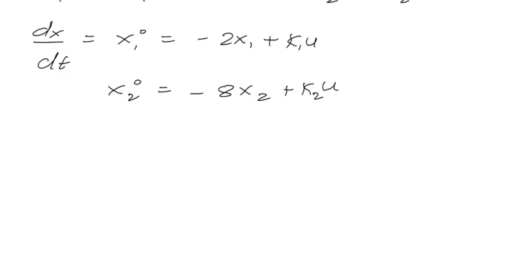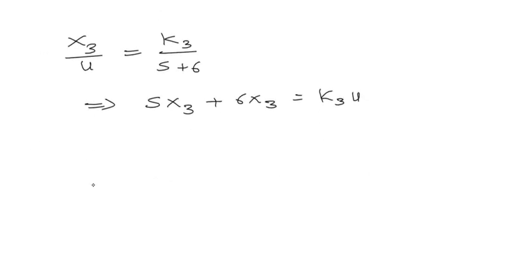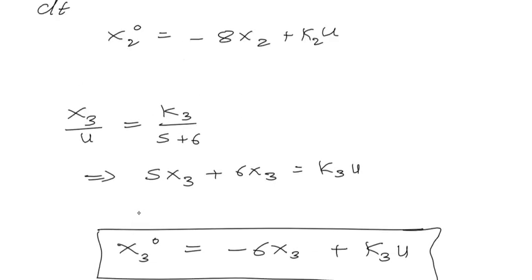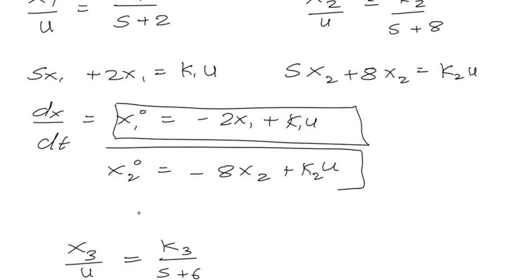Similarly, x3 divided by u would be equal to k3 divided by (s plus 6), where we get s·x3 plus 6·x3 equal to k3·u, and finally dx3/dt equals minus 6·x3 plus k3·u. This is the first required answer, this is the second required answer, and this is the third required answer.